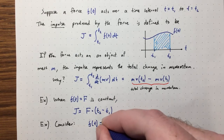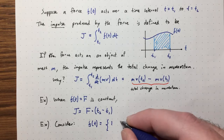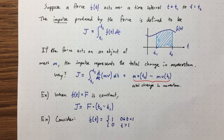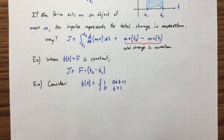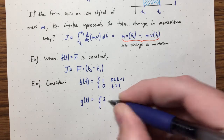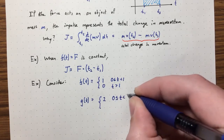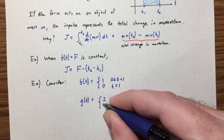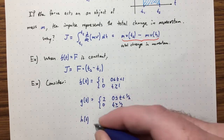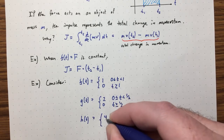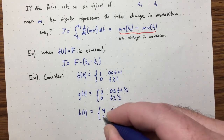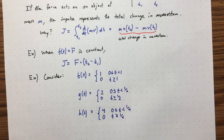Let's define three functions to illustrate. f(t) = 1 for t between 0 and 1, then 0 for t ≥ 1 — a force of one newton for one second. g(t) = 2 for t between 0 and one-half, then 0. And h(t) = 4 for t between 0 and one-quarter, then 0. You can see the pattern.